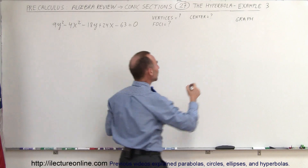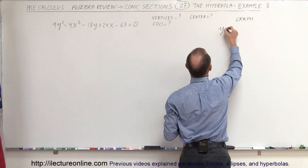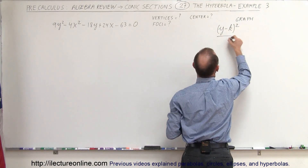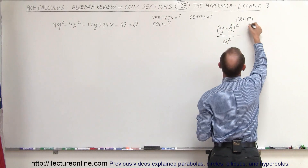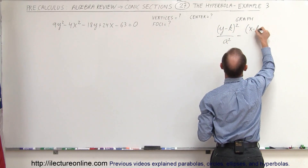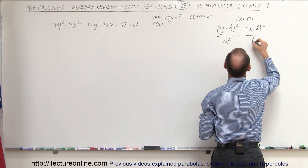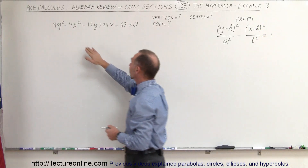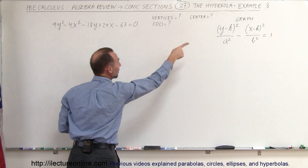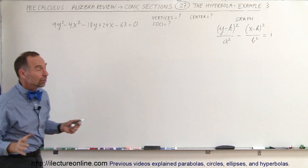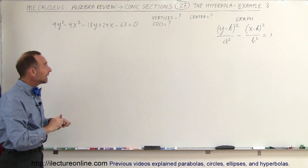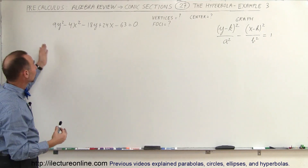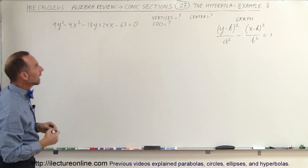The general equation for that one is going to be: the quantity y minus k squared over a squared, minus the quantity x minus h squared over b squared, equals 1. We have to take the given equation and make it look like that, using what we call the completion of the square method.